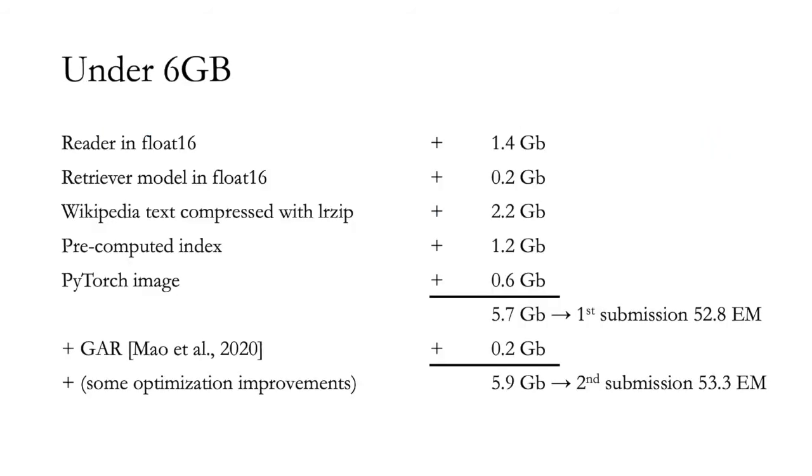Finally, if we take a look at the size of our system we have, 1.6 gigabytes for the models in float 16, 2.2 gigabytes for the Wikipedia text compressed with 7-Zip, 1.2 gigabytes for the pre-computed retriever index, 0.6 gigabytes for PyTorch. This leads to our first submission which achieves the performance of 52.8 exact match. With some optimization improvement and an ensemble of retrievers using generative augmented retrieval, we further improve the performance of the system to 53.3 exact match. That's all for the description of our system. Thank you all for your attention.